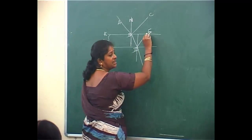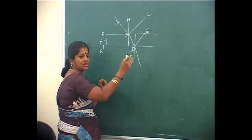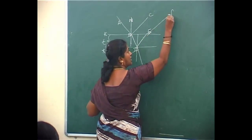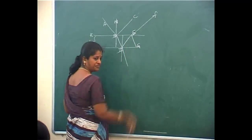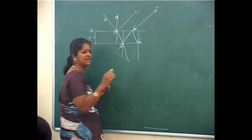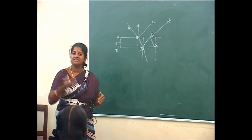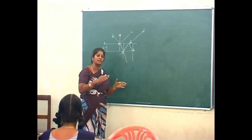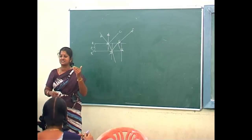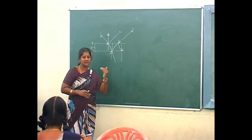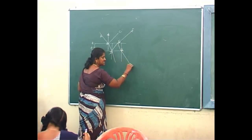Along DE, when the light falls on the first surface again, it partially gets reflected along EF and a part of light gets refracted along EFG. Whenever light falls on any surface, we immediately draw a normal, and with respect to that normal only, I will make the ray travel inside the other medium.